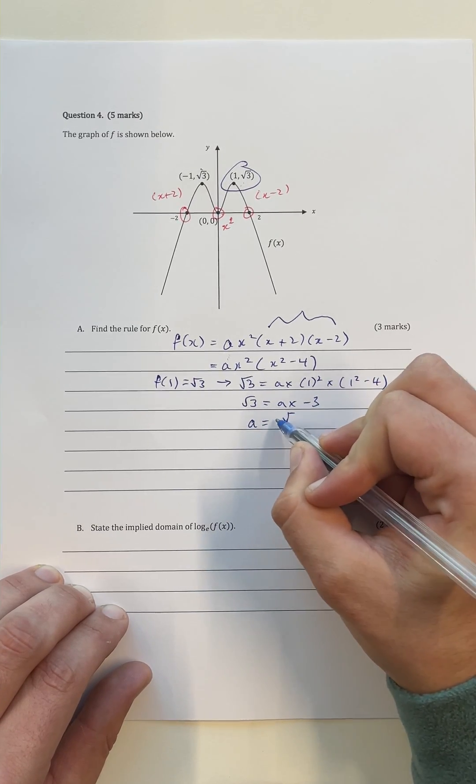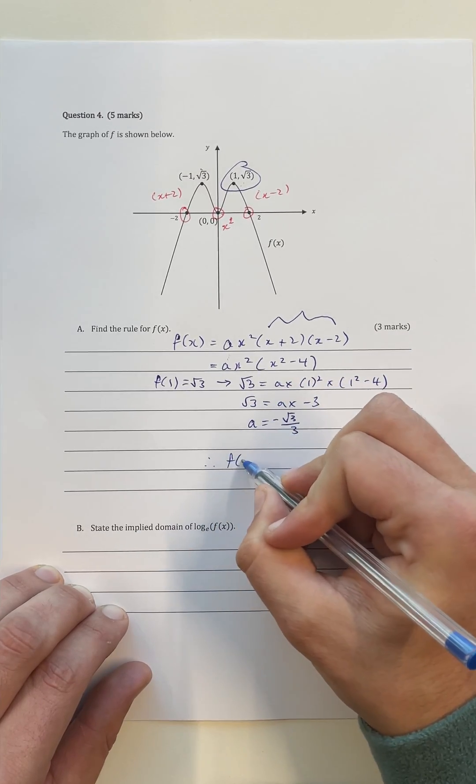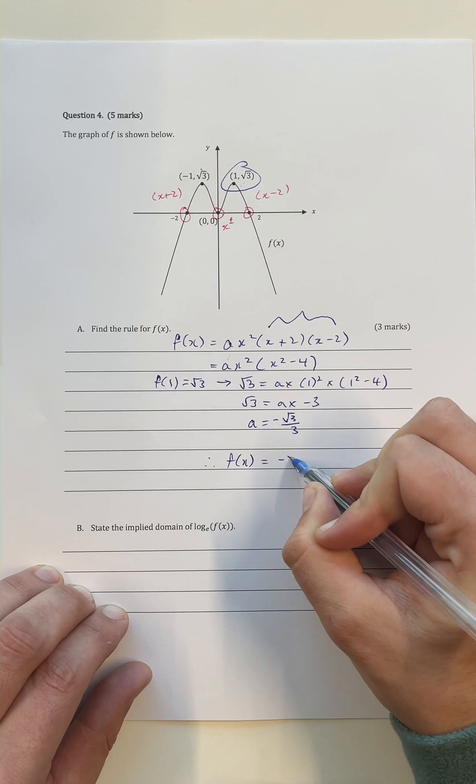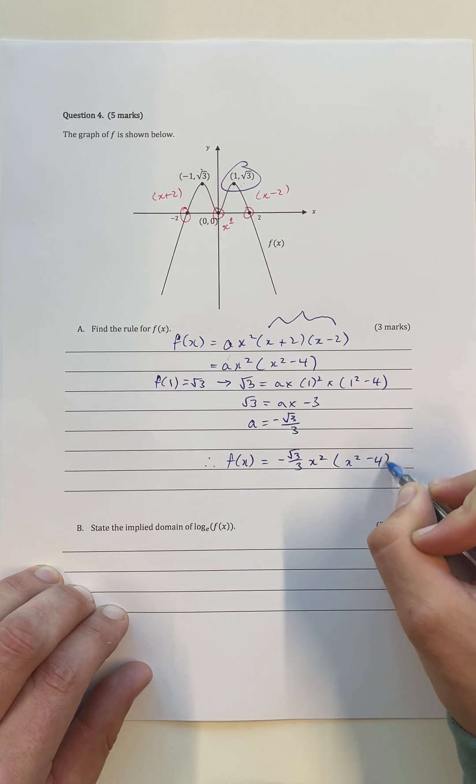Therefore, a is going to be equal to the negative square root of 3 over 3. And now we know that only unknown, and we can find our full function rule as f of x is equal to the negative square root of 3 on 3 x squared times x squared minus 4.